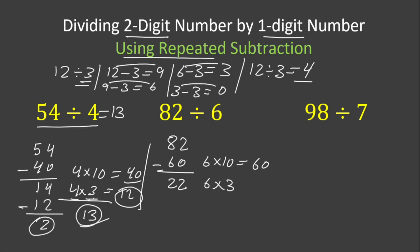3 times 6 is equal to 18. Now 22 minus 18, 22 minus 18 is equal to 4. How many times did we subtract 6 from 82? We subtracted 13 times. So randomly the answer for this is also 13. 82 divided by 6 equals 13.